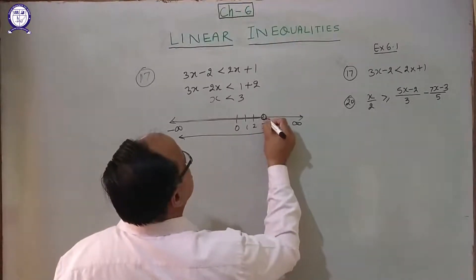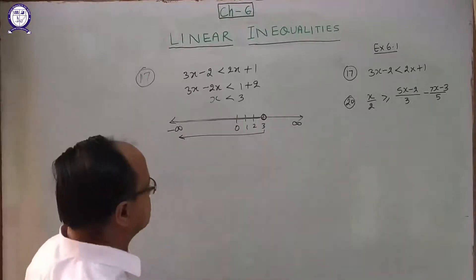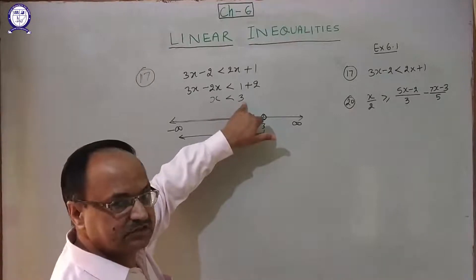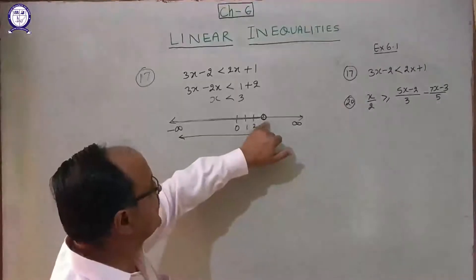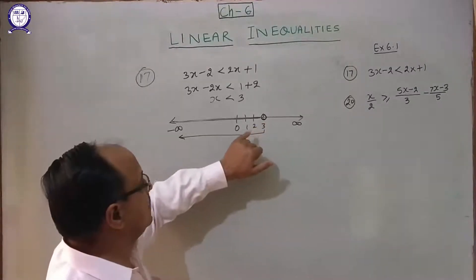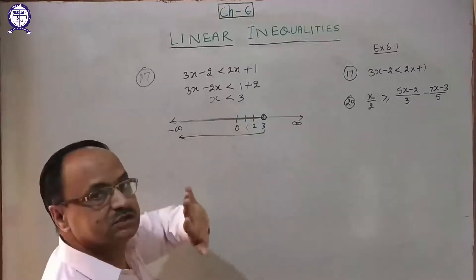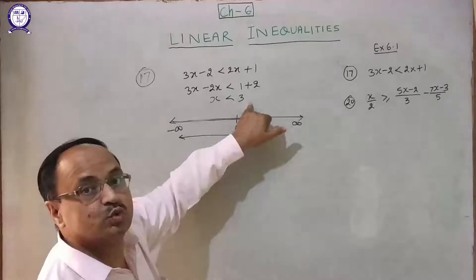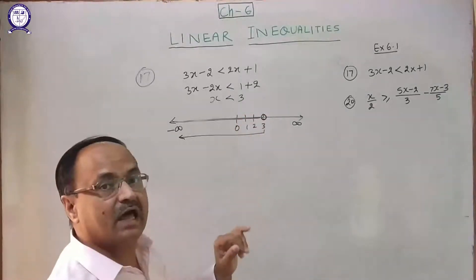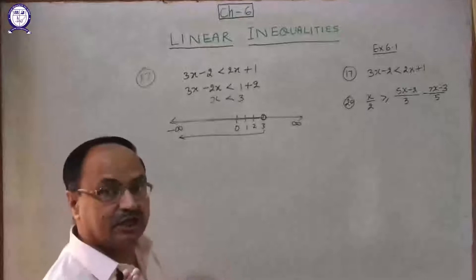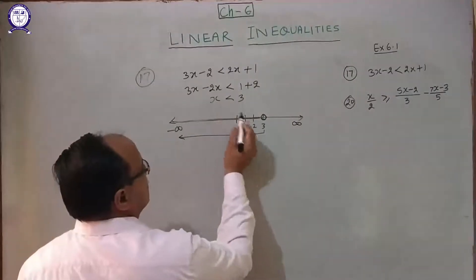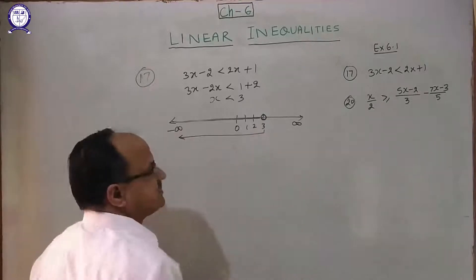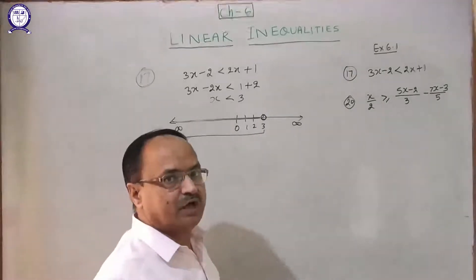This is an open circle, not a dark circle, because x is strictly less than 3. However, if suppose the sign were less than or equal to 3, then the circle would be darkened. Otherwise, no need to darken — correct.